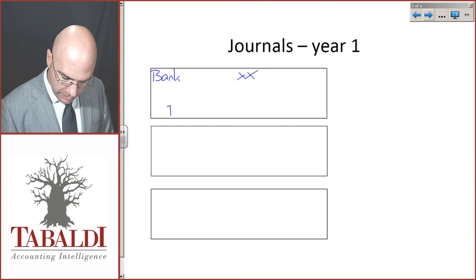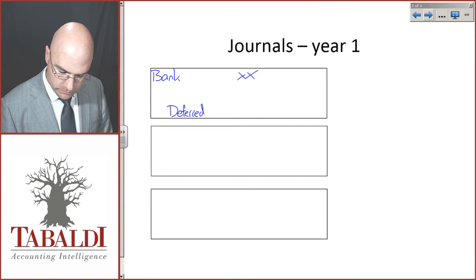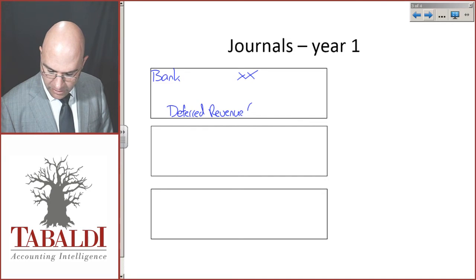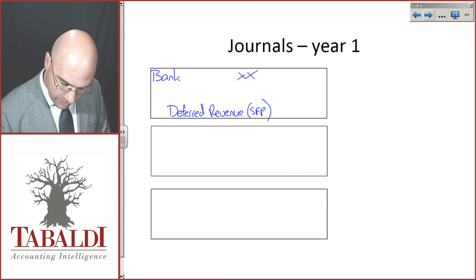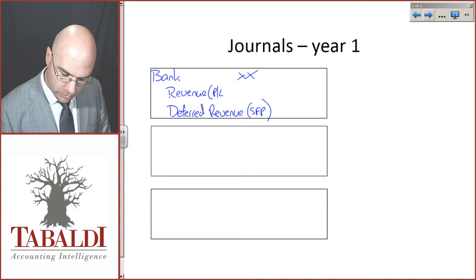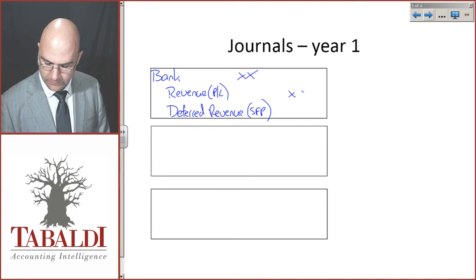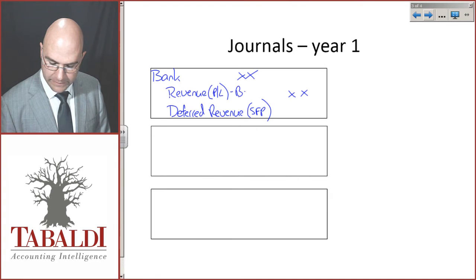What we did know, however, is that we credited deferred revenue from the customer loyalty points. That's going to be a liability in the statement of financial position. The balancing figure will be revenue in profit or loss.